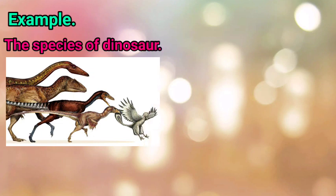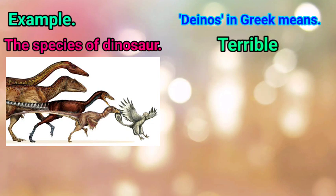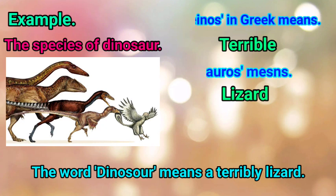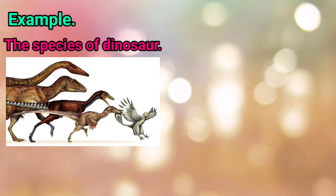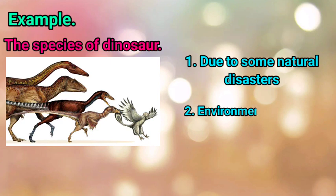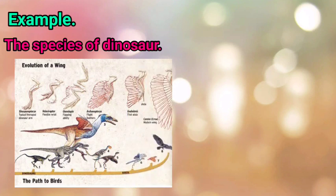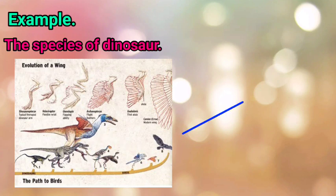For example, consider the species of dinosaurs. In ancient times, many types of animals called dinosaurs were present, but today they are extinct. The word 'dinosaur' comes from Greek — 'dino' means terrible and 'saurus' means lizard, so dinosaur means 'terrible lizard.' Dinosaurs are believed to have become extinct due to some natural disaster or environmental change, as they could not adapt in this process of evolution. The discovery of fossils of some dinosaur species with wings suggests that two-legged, winged dinosaurs evolved into birds.